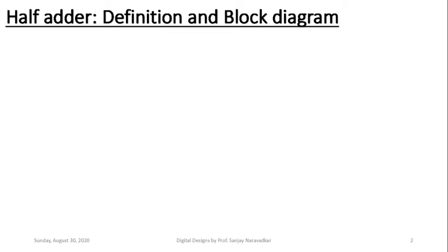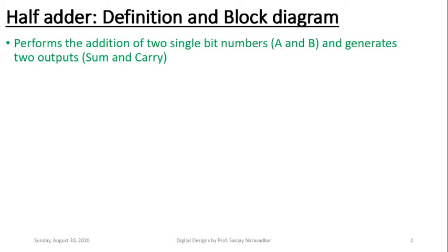Now let us start with the basic half adder — first of all, the definition. As shown on the screen, it performs the addition of two single-bit numbers, designated as A and B, and generates two single-bit outputs: the sum output and the carry output. Variable A and variable B define the two inputs, and the output variables will be sum and carry.